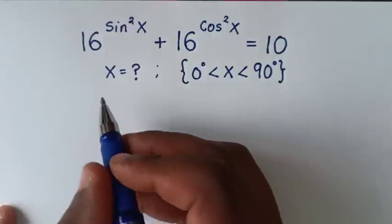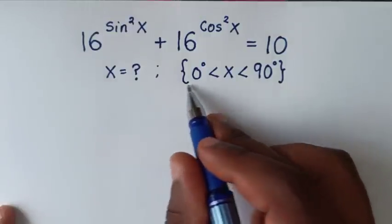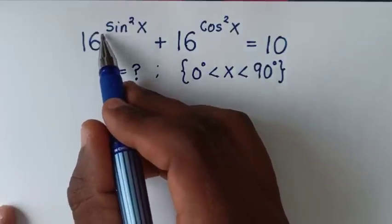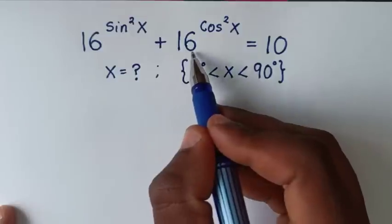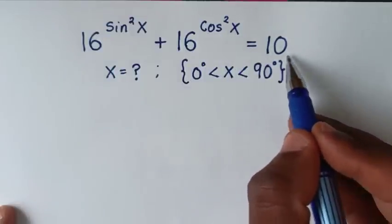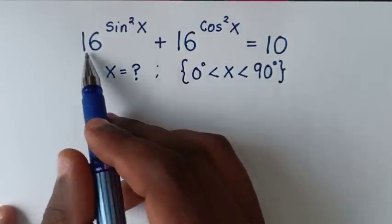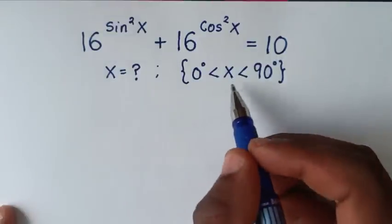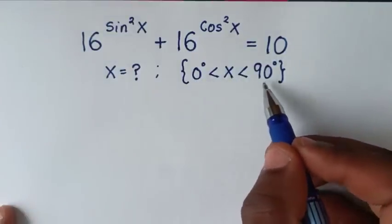Hello, you are welcome to solve this math problem, which is 16 power of sine square x plus 16 power of cosine square x is equal to 10. To find the values of x from this math problem, so that x is between 0 degrees to 90 degrees.